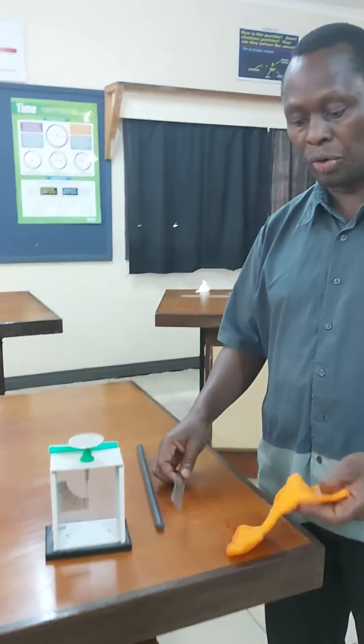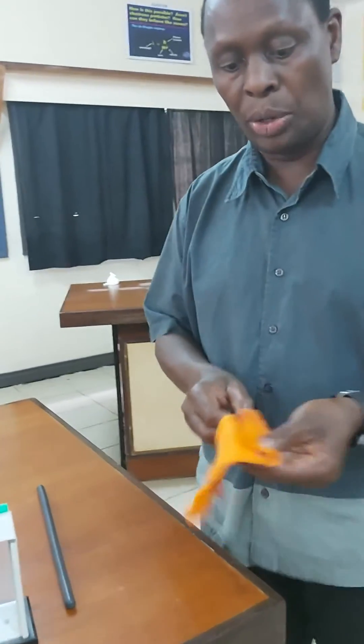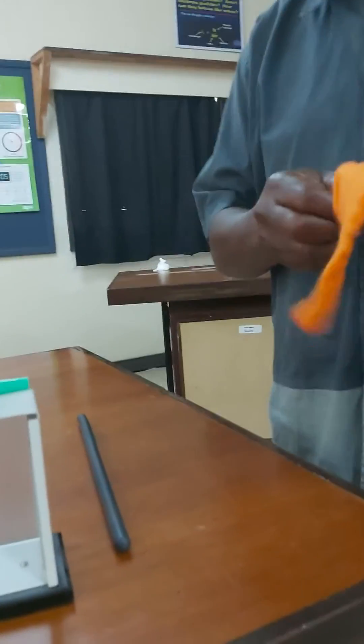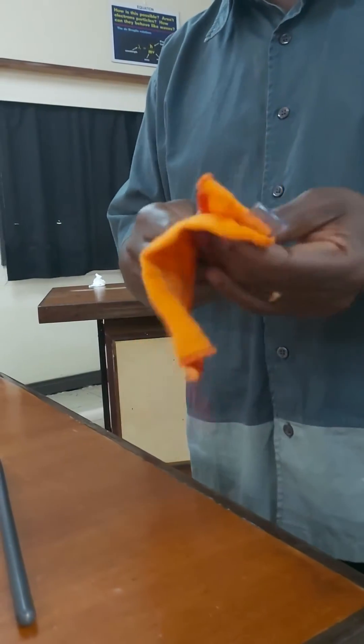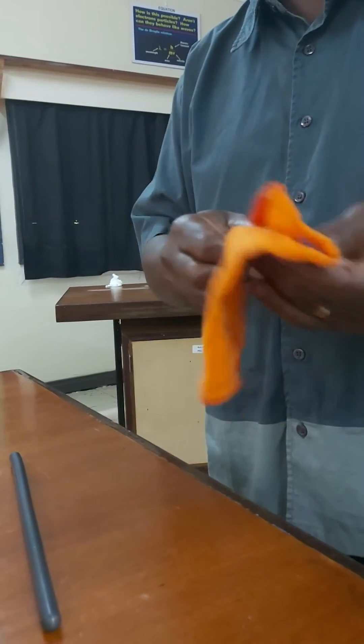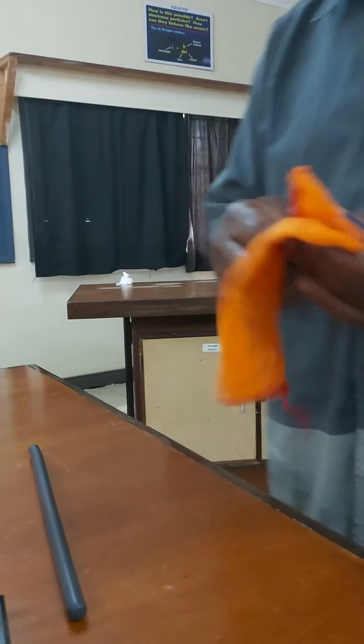To generate a static charge I will rub one piece of insulating material against another, and when I do that I'm able to transfer electrons from one material to the other. In this case the electrons might flow from the ruler onto the clothing, therefore the ruler becomes positively charged and the clothing becomes negatively charged.